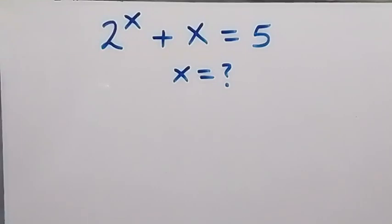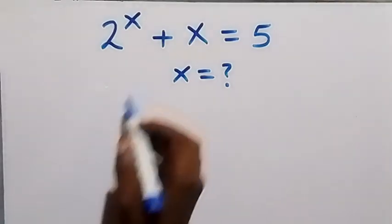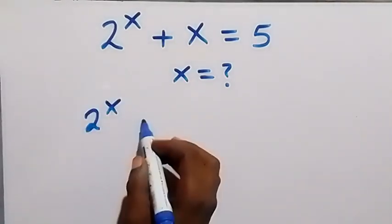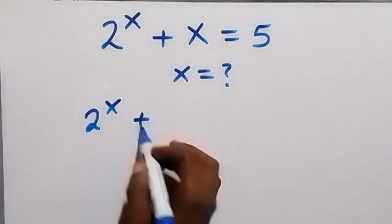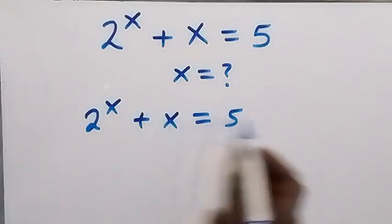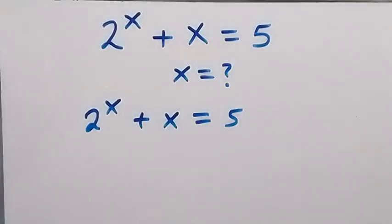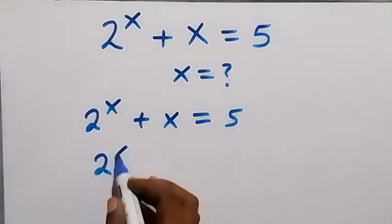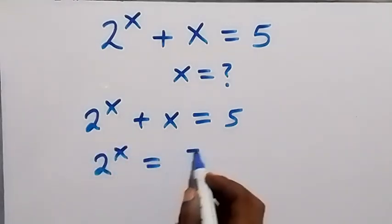Hello, you're welcome here. Let's solve this nice algebra exponential equation. We have 2 raised to power x plus x equals to 5. First, let's take this x to the other side, and this becomes 2 raised to power x equals to 5 minus x.